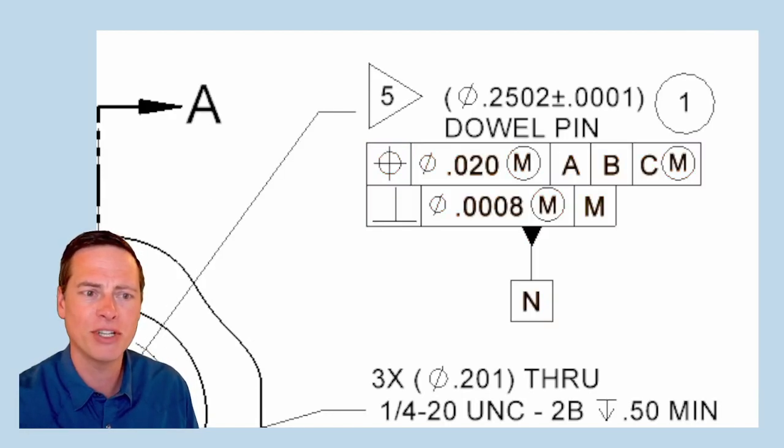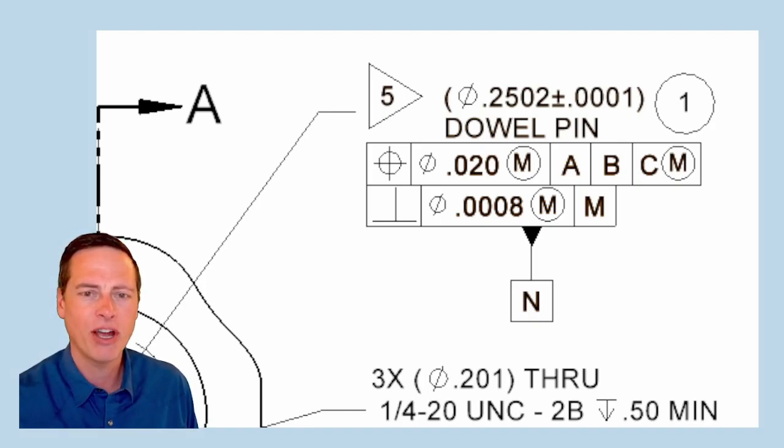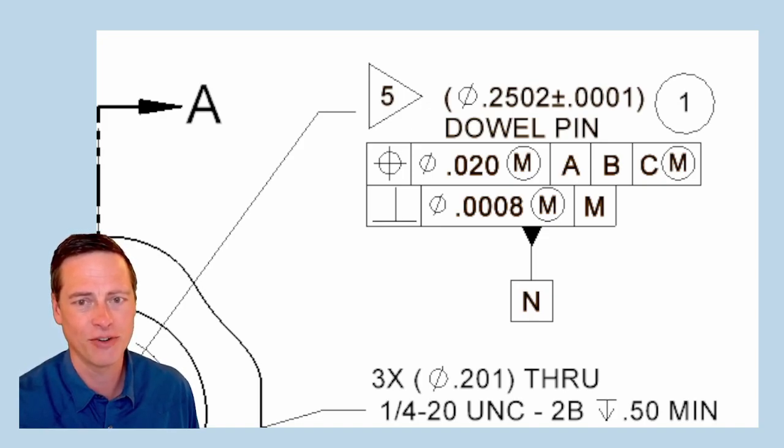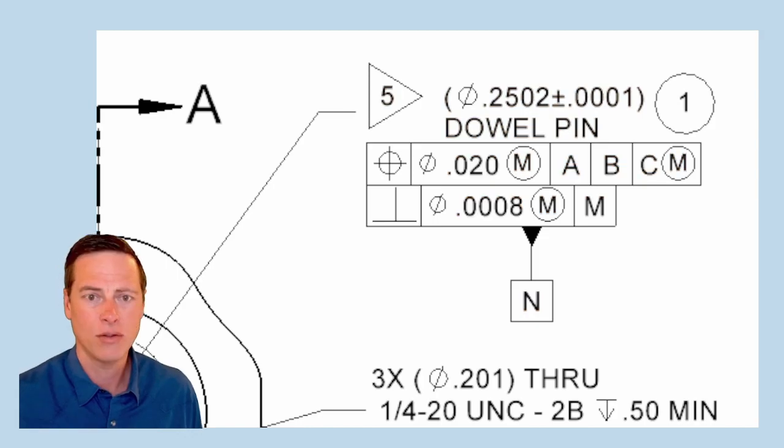Now draw your attention to this perpendicularity callout, where the pin is controlled to 8 tenths diameter at MMC, just at datum M primary. Now here's where someone who is looking to get a very close fit out of this pinned interface is going to encounter a little bit of bad news. And that's because you really do need to have some tolerance here for the perpendicularity of the dowel pin. And just a note, pretty often I'm advocating that you use zero at MMC tolerances, but we can't do that in this case. And that's just because the machinist has no control over what size the dowel pin is within its size limit. And that limit is really small at two tenths.